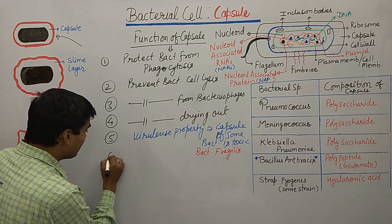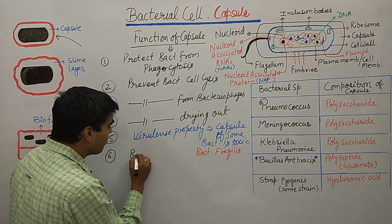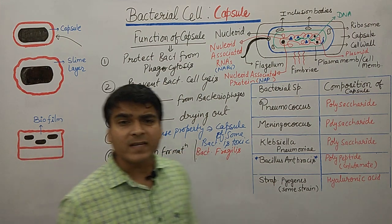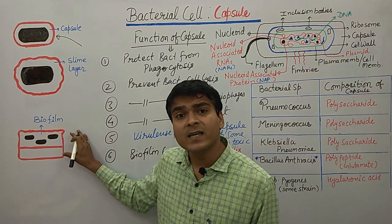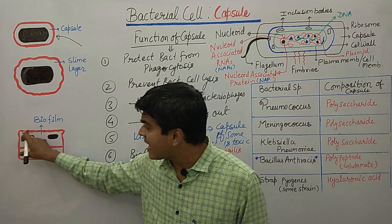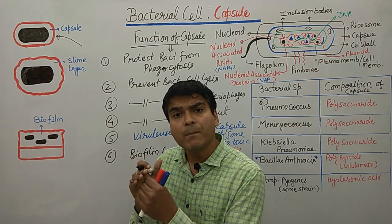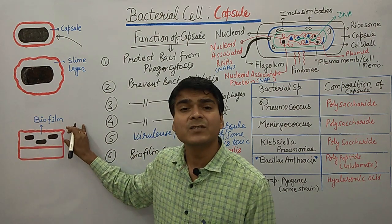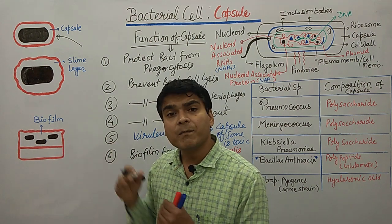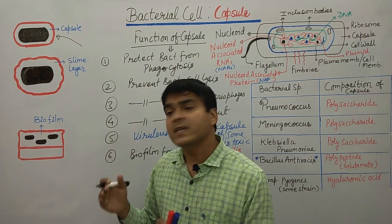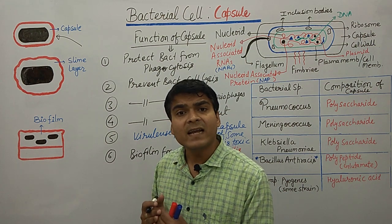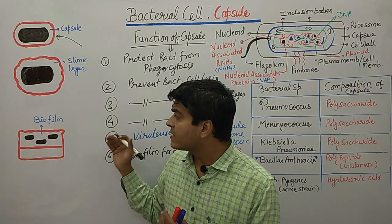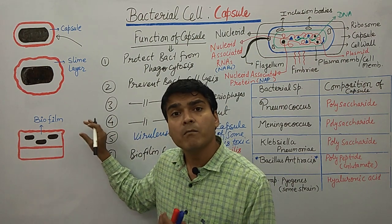Another function is biofilm formation. When bacteria in an area produce a slime layer and multiple bacteria become embedded together in that slime layer, they form a structure called a biofilm. Bacteria that form biofilms can infect medical devices such as catheters and other medical equipment.